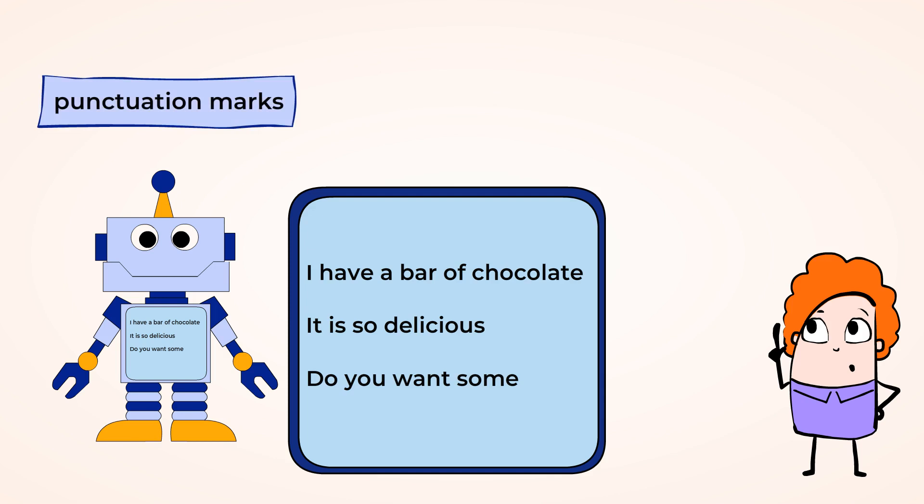Punctuation marks. Punctuation marks are the symbols we put at the end of a sentence. Periods, question marks, and exclamation points. These symbols can tell us what type of sentence we are reading and how to change our voice to match the feelings.